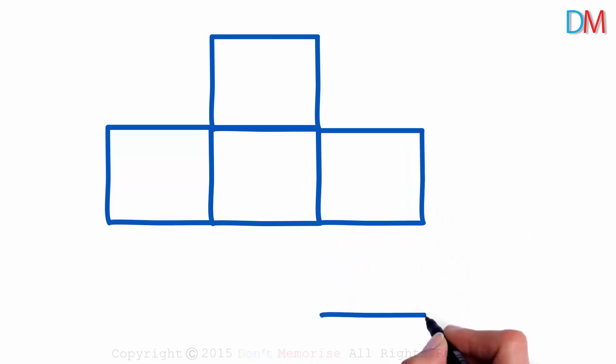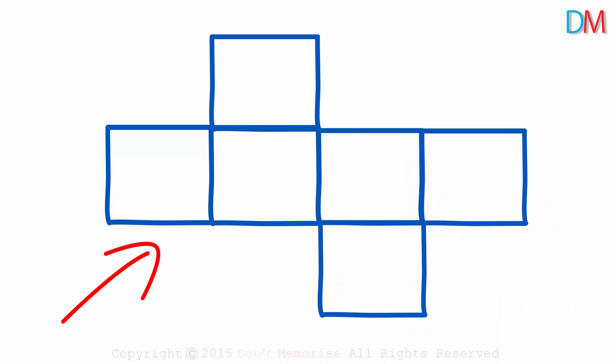Let me draw a net of a solid. This is a net of a solid in which all six faces are squares. Given this solid, we have seen how its net can be drawn. But here we are given the net and we have been asked to find the solid it represents. How do we solve this?